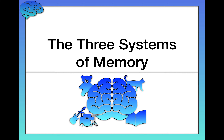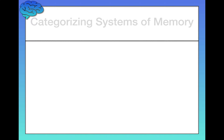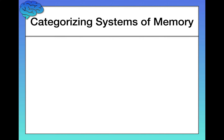In this video, we're going to discuss the three systems of memory. Before we do, I want to describe how psychologists categorize these three systems of memory. There are two main dimensions along which these systems of memory differ, and this determines how we categorize them.